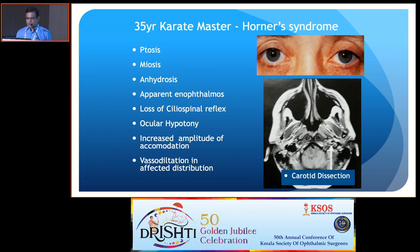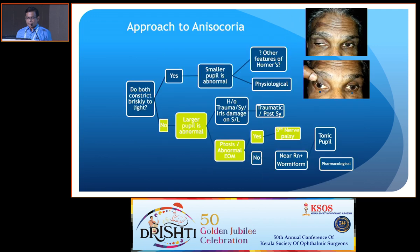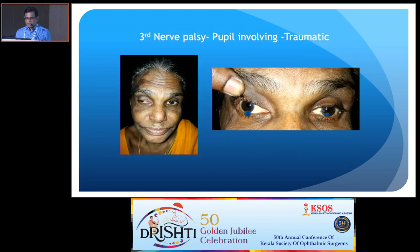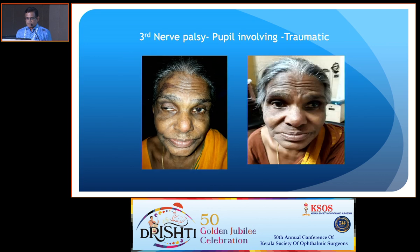Another case: an unfortunate lady had cataract surgery in the left eye and came for a post-op checkup. As you can see here, she has features of third nerve palsy — you can see the bruise on the right side — and she also had a pupil-involving third nerve palsy. You can see the larger pupil on the right side, and she made a good recovery within a few months.